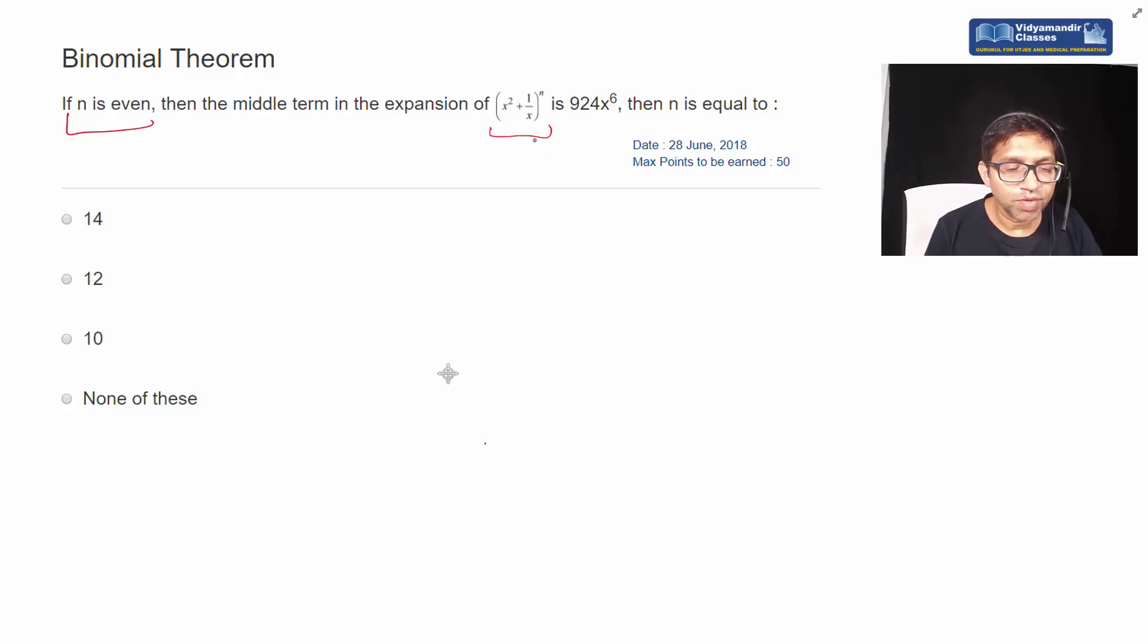So middle term in the expansion of this. First let's see if n is even, then how many total terms will be n plus one. So what will n plus one terms be here? This is odd because n is even, so n plus one total number of terms are odd.